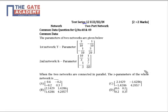Hi friends, this question from the test is number 12. Finding the Z parameter of a two-port network is a common data question. In the question, the parameters of the two networks are shown below. The first network has a Y parameter: 3/10, -1/10, -1/10, 3/20. The second network has an H parameter as given. The first question of the common data is: when the two networks are connected in parallel, find the Z parameter of the network.